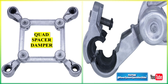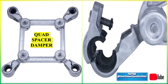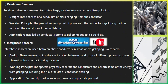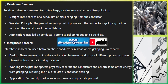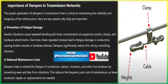Tuned mass dampers are devices with a mass attached to the conductor via a spring or flexible element. They consist of a small mass suspended from the conductor by a flexible material like a spring or cable. The mass moves in opposition to the conductor's vibrations, damping them by converting mechanical vibration energy into heat or internal friction. These are usually tuned to specific vibration frequencies and can be used for both Aeolian and subspan vibration damping.